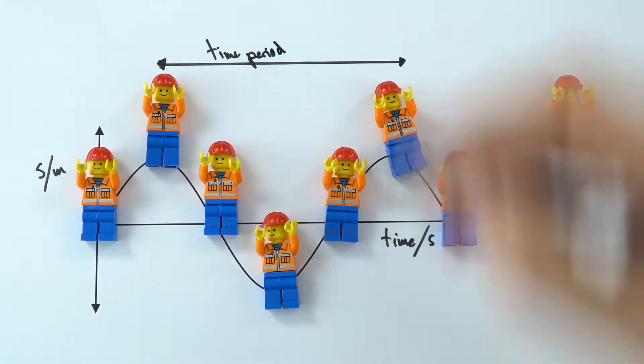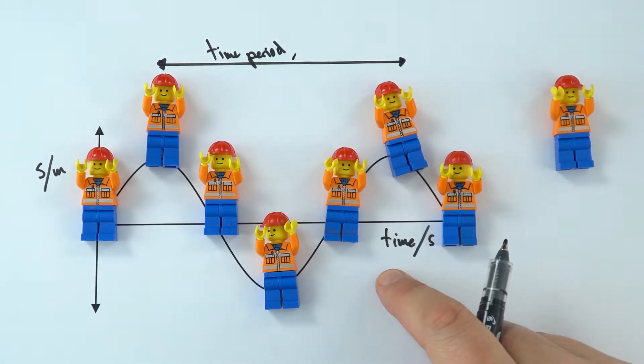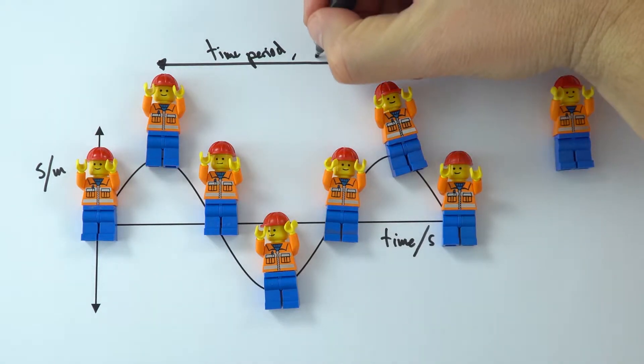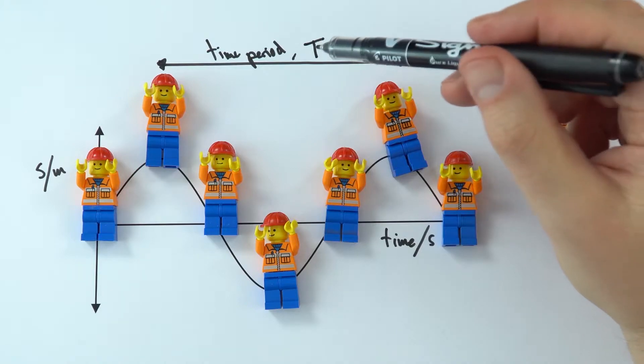And the symbol that we use for time period, rather than just using a little t that we use to represent time, we use capital T to show that this is the time period for one complete oscillation.